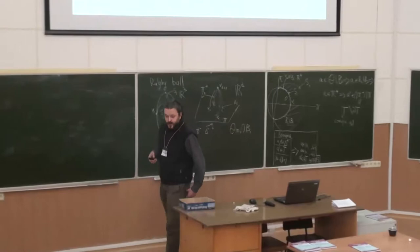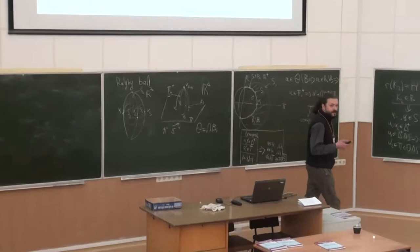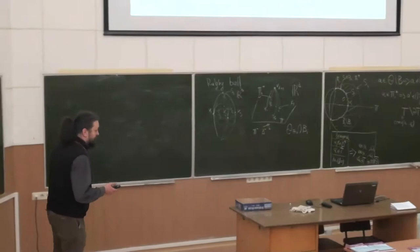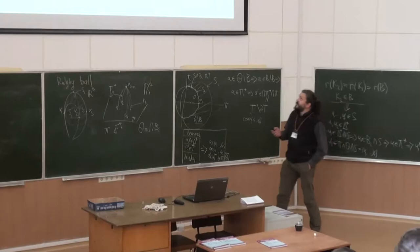I will speak on graphs with large chromatic number but locally small chromatic number. I must start with defining what locally small chromatic number means. If we have a very large graph, usually we have access only to some part of it. My question is: if we know some information about these small parts, what can we say about some global properties of the graph?